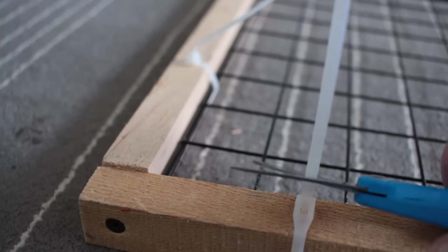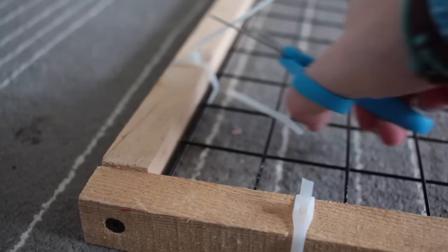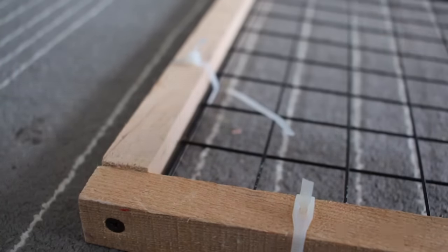Then I take some scissors and cut the ends of the zip ties off, leaving a little bit just in case I need to tighten them more later. Then I make 9 more panels, so I have 10 panels for this pen.